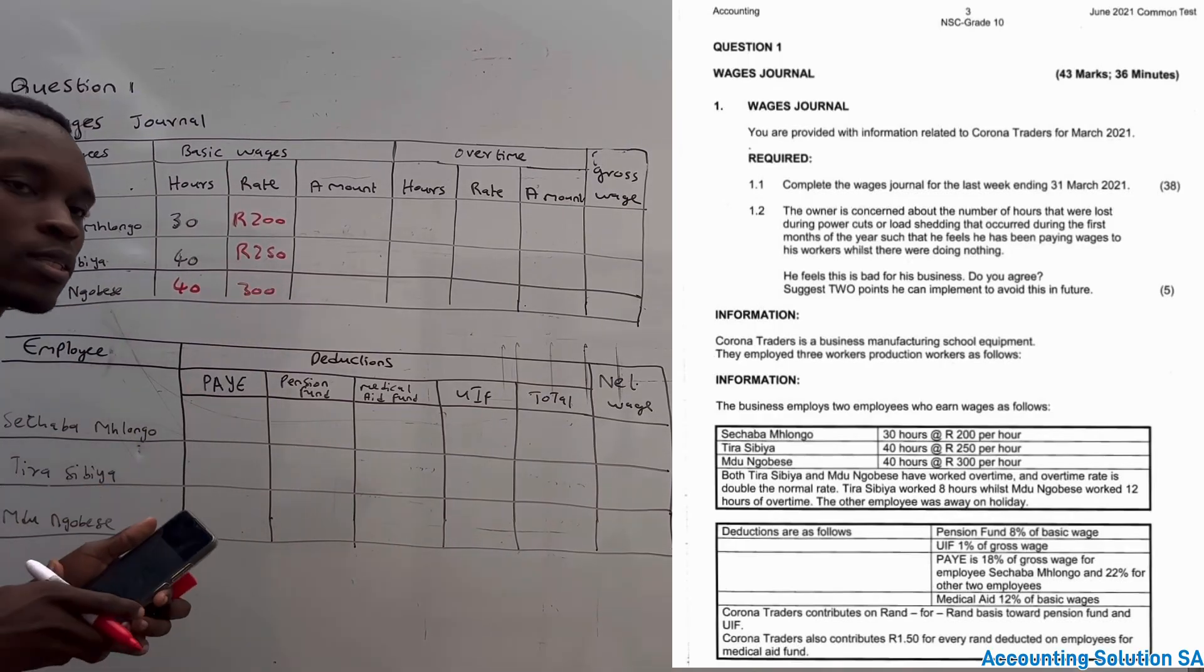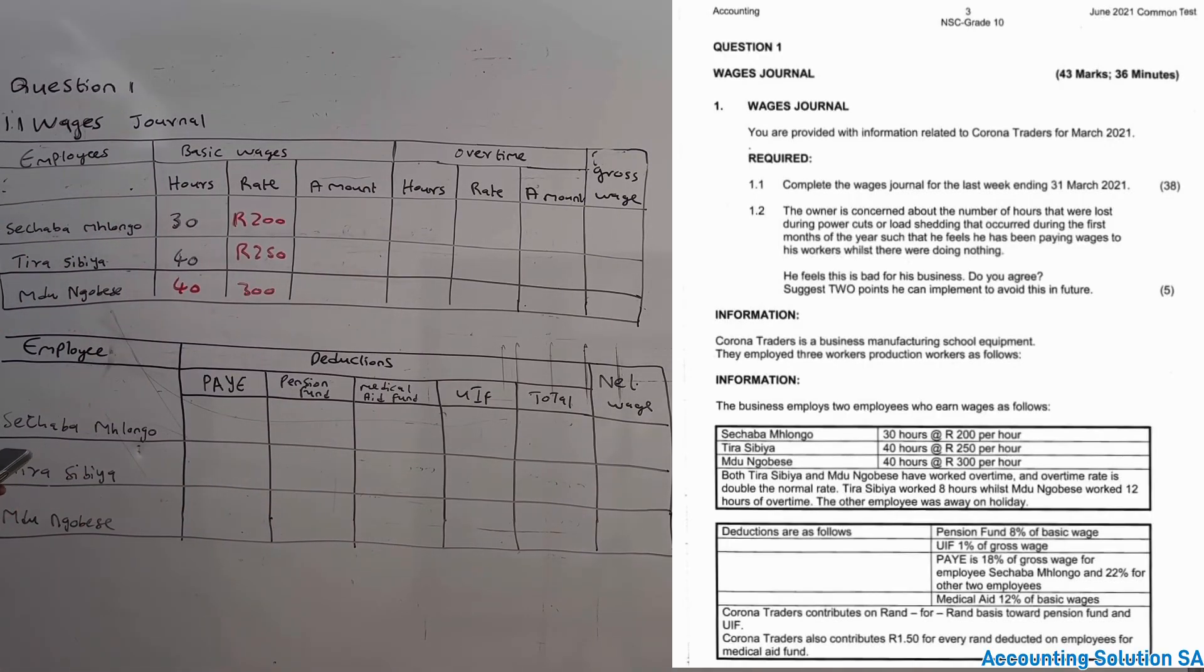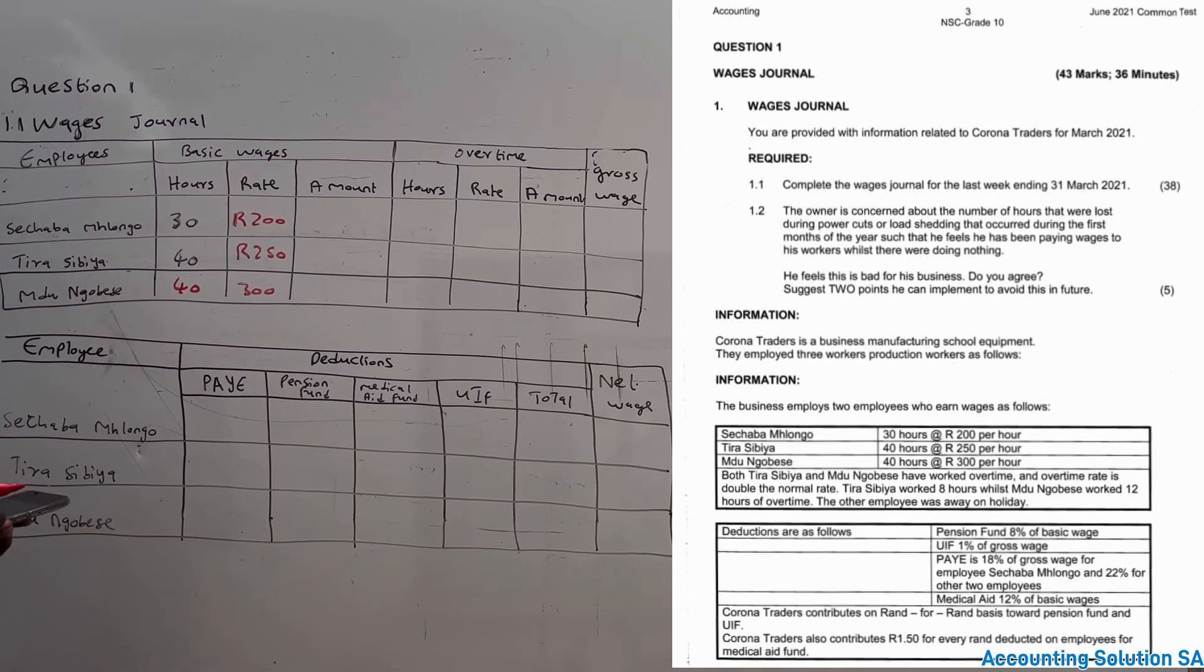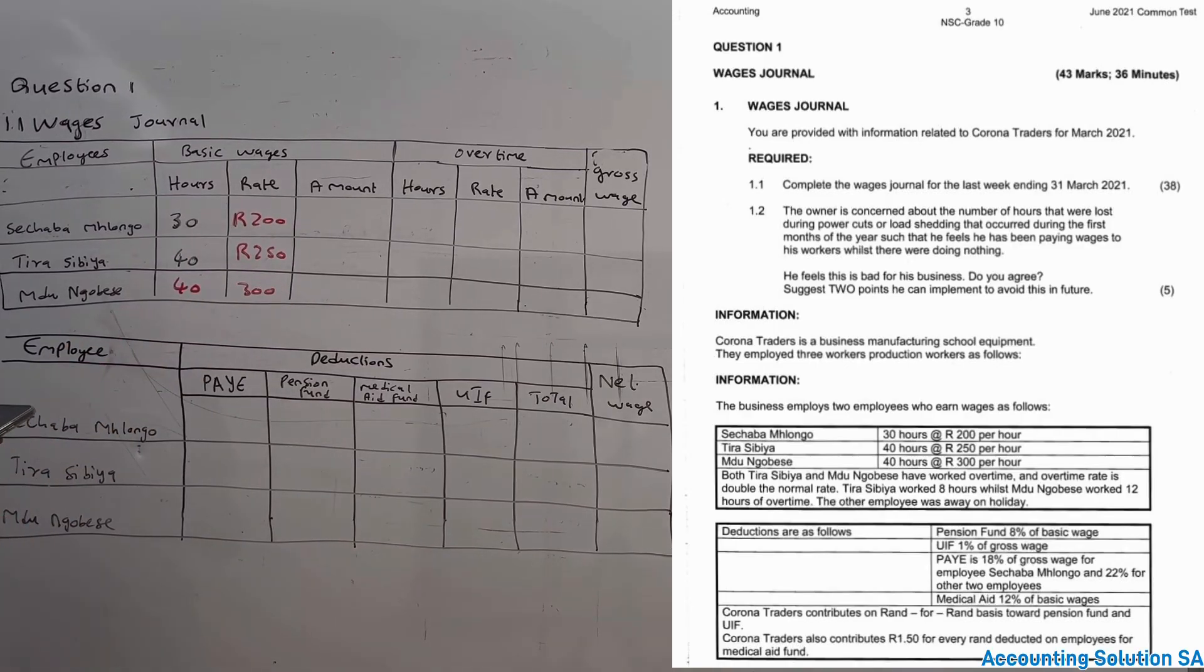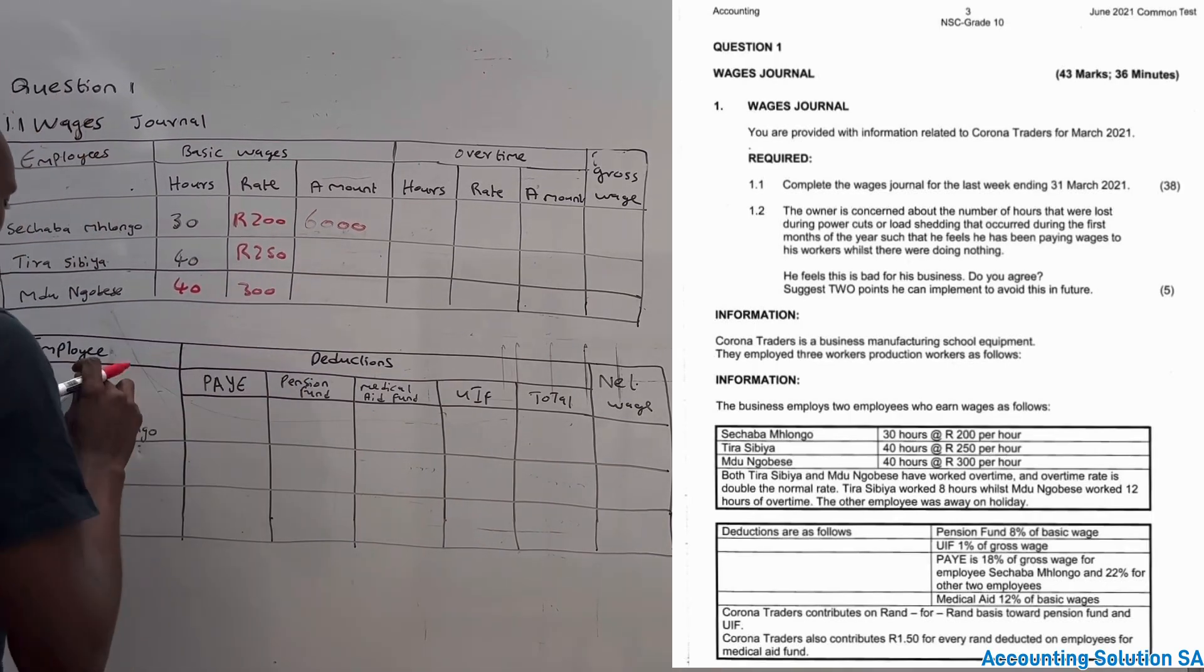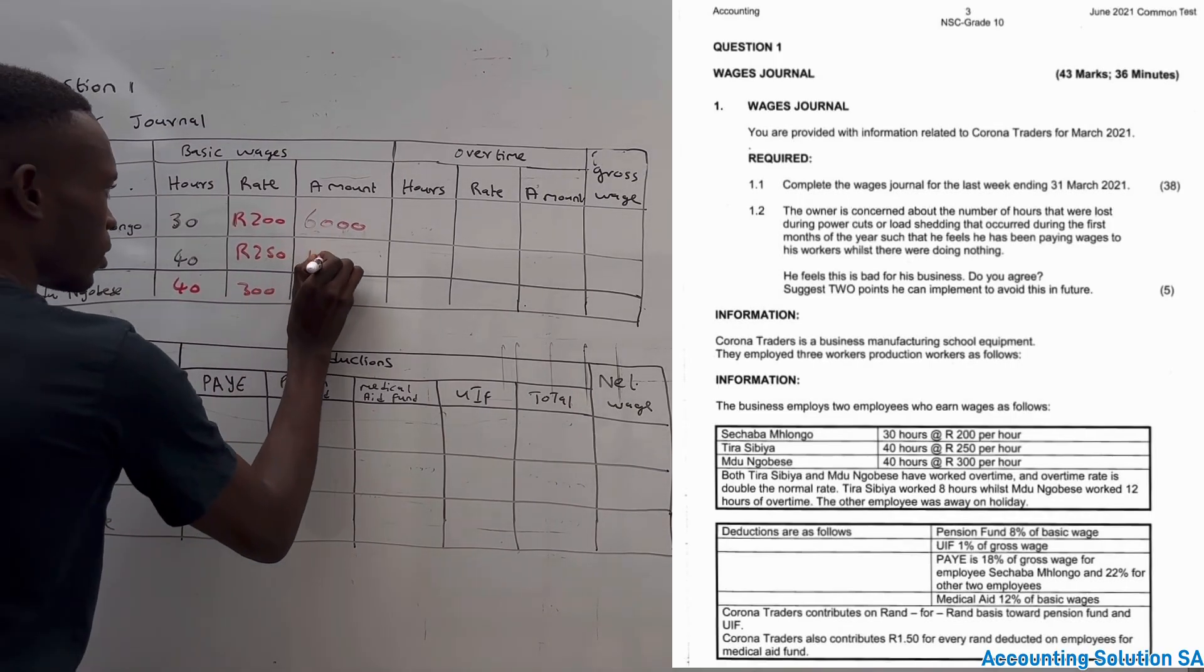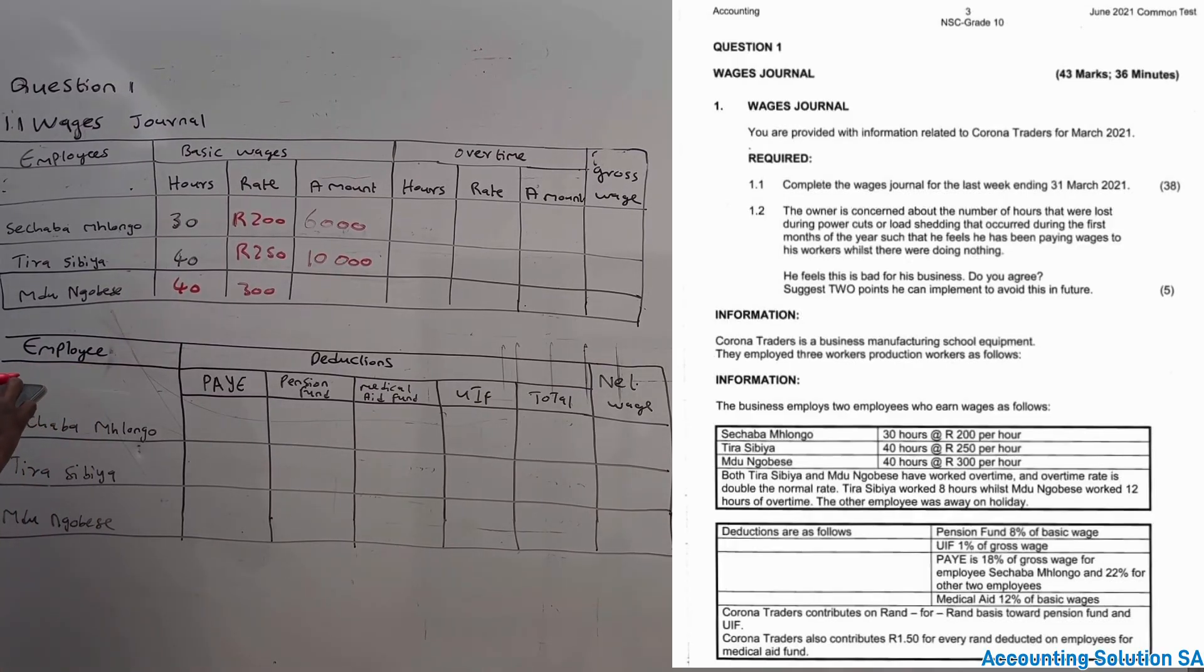It's more like copy and paste, guys, just imagine six marks just for this. It's 38 marks in total. So now we have to go to amount. We have to calculate - you just multiply this by this, you get the answer. 30 multiplied by 200 is going to give us R6,000. 40 multiplied by 250 is going to give us R10,000, and the other one is going to give us R12,000.